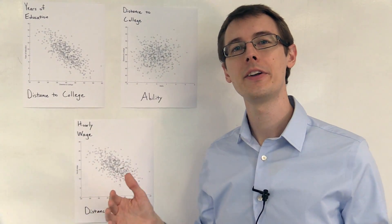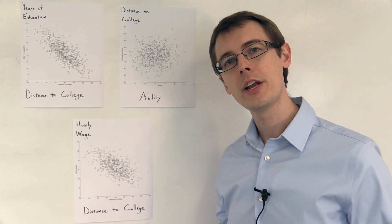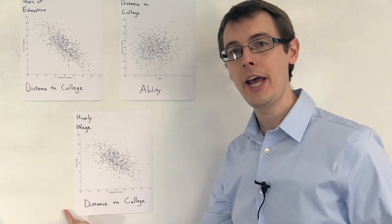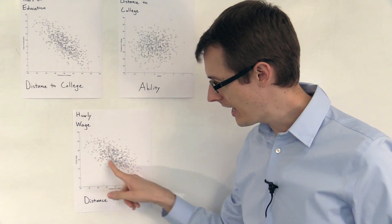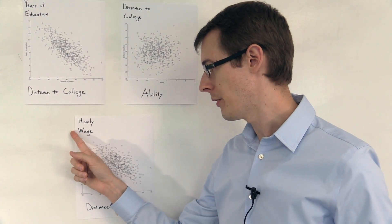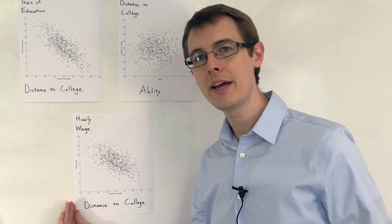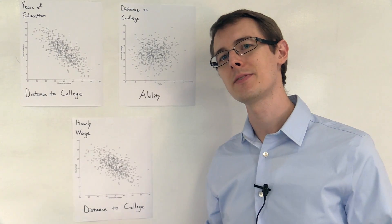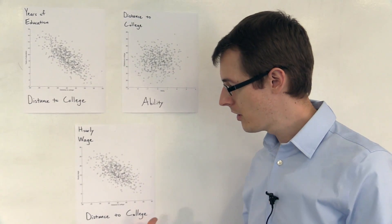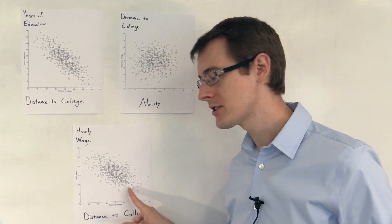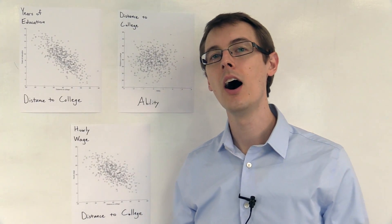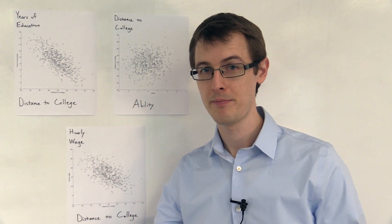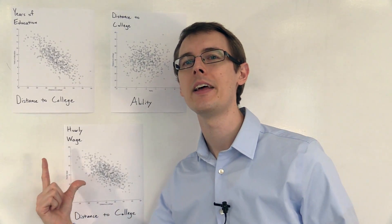Now that we've justified our instrument, we look at the correlation between the instrument — distance to college — and the outcome variable — hourly wage. We see there is a correlation: a negative relationship between distance to college and hourly wage, meaning people who live closer tend to make more money. Because this instrument satisfies those three assumptions, we can conclude that this correlation represents a causal effect of years of education on hourly wage — of the treatment on the outcome — by looking at the correlation between the instrument and the outcome.